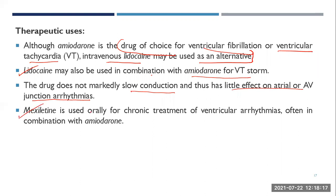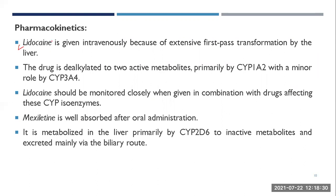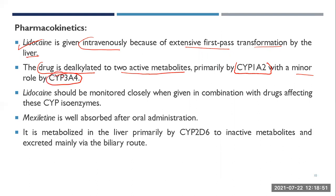Mexiletine is used orally for chronic treatment of ventricular arrhythmias, often in combination with amiodarone. Pharmacokinetics: lidocaine must be given intravenously due to extensive first-pass transformation by the liver. The drug is dealkylated to two active metabolites primarily by CYP1A2, with a minor role by CYP3A4. Lidocaine should be monitored closely when given in combination with drugs affecting these CYP isoenzymes.